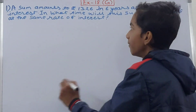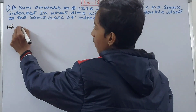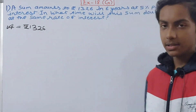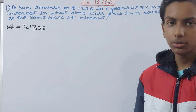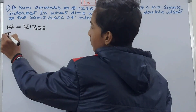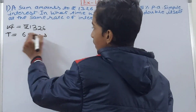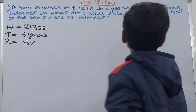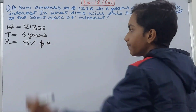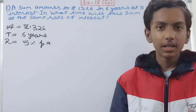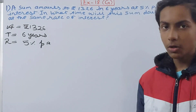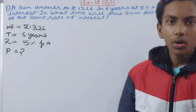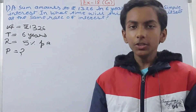So from the first part, what do we know? We know the amount is 1326, the time is six years, and the rate is five percent per annum. These are the three things given in the first scenario. The one thing we do not know and which is not given is the principal.